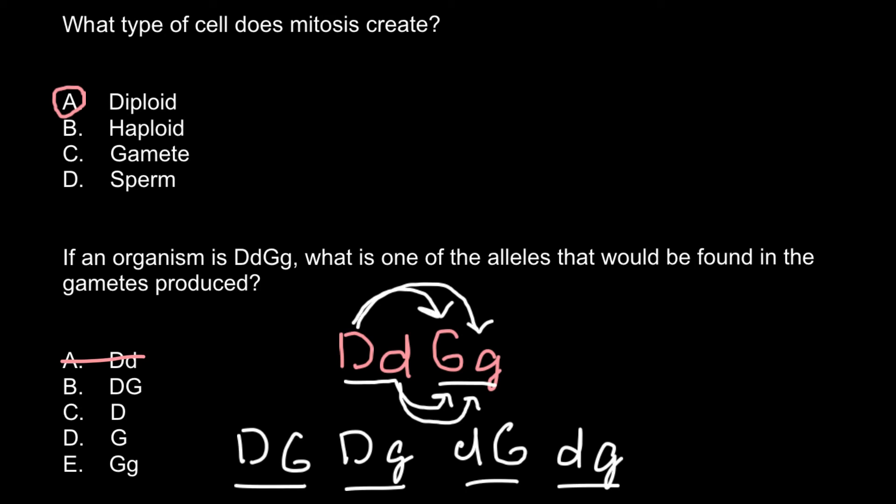Answer B, we have capital D and capital G. So this variant is possible in gametes. Answer C gives us a combination of another variant, and we look at our variant where we have only one allele.